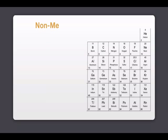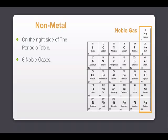Non-metal elements. They are being located on the right side of the periodic table. On the first right column, there are 6 noble gases. On the second right column, there are 5 halogens.